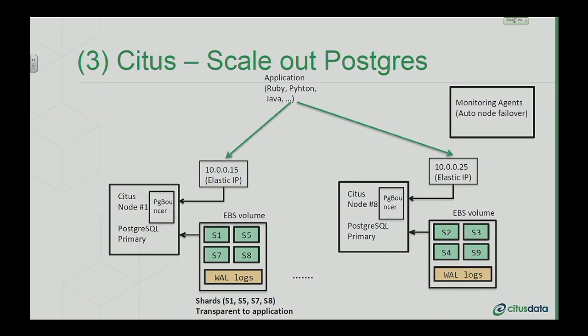The third one is Citus — basically scaling out Postgres. You take your tables and shard them. Behind the covers you have shards S1, S2, S3, where each shard is a table. You typically want to shard on a granular level such as user ID or device ID, so you can parallelize computations across dozens of machines. This way you can keep dozens of terabytes of data in memory and use hundreds of CPU cores in parallel.